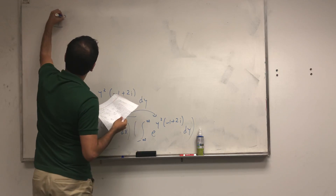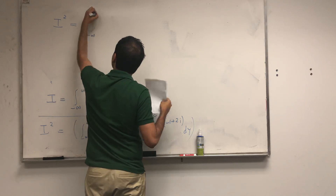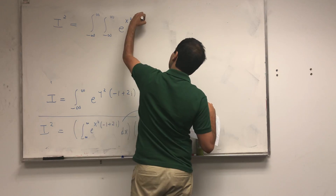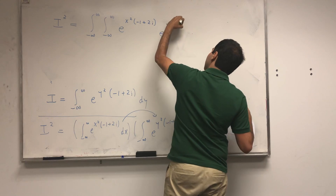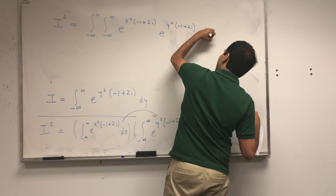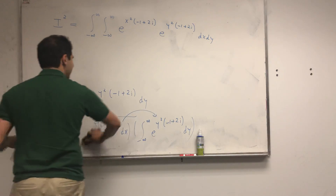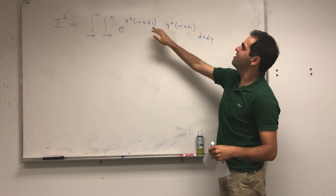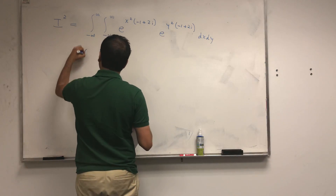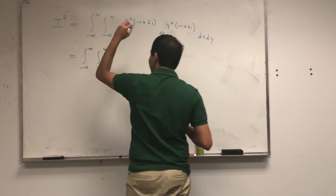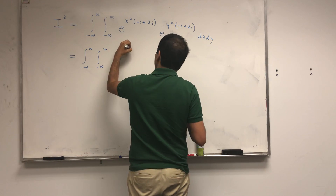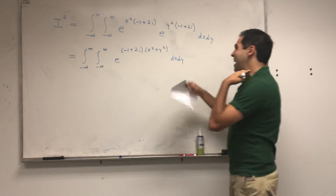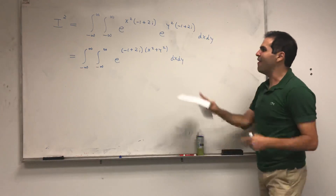I squared becomes a double integral from minus infinity to infinity of e to the x squared times minus 1 plus 2i, times e to the y squared times minus 1 plus 2i, dx dy. You can conveniently combine the exponents: factoring out minus 1 plus 2i gives a double integral of e to the minus 1 plus 2i times (x squared plus y squared), dx dy.